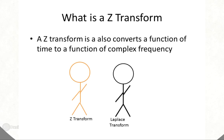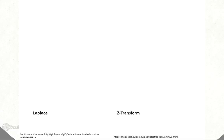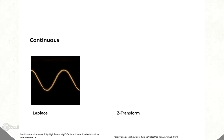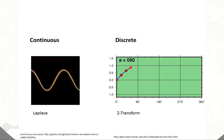Just like the Laplace transform, the Z-transform converts a function of time into a function of complex frequency. But where the Laplace transform is used on continuous systems, the Z-transform is used on discrete or sampled systems.